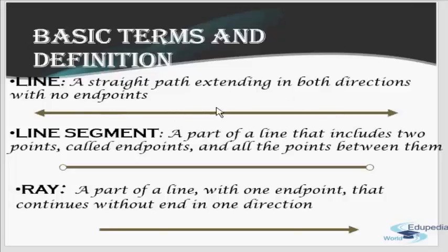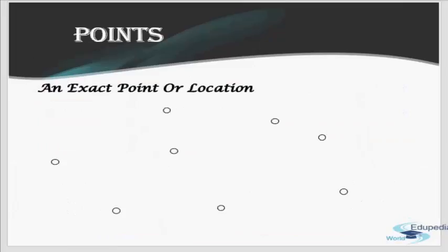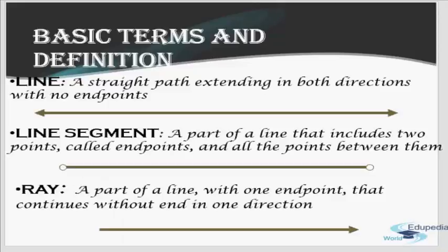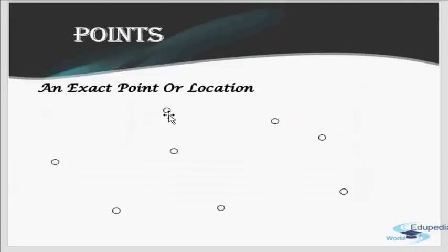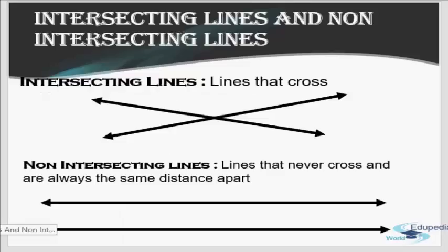A line has no endpoint — it goes in both directions indefinitely. A line segment is any segment of that line — just a portion of it. A ray is part of a line with one endpoint that continues without end in one direction, so if you start at a point and keep going in one direction, you make a ray. A point is an exact location with no continuation in any direction.